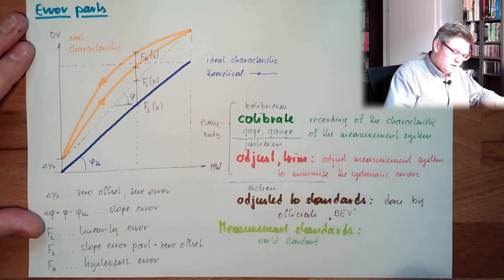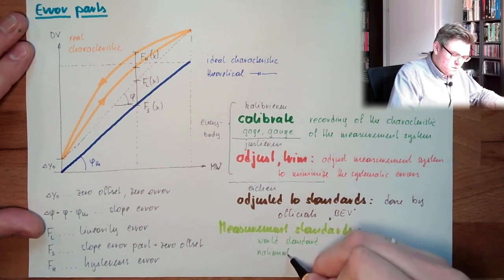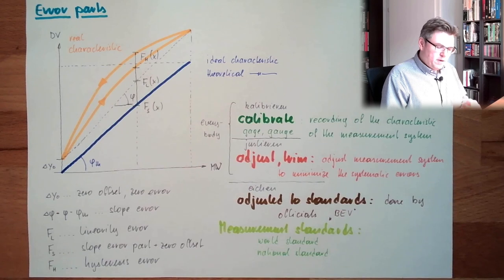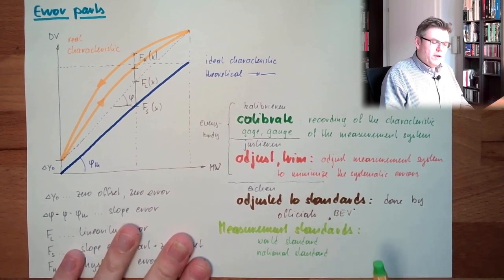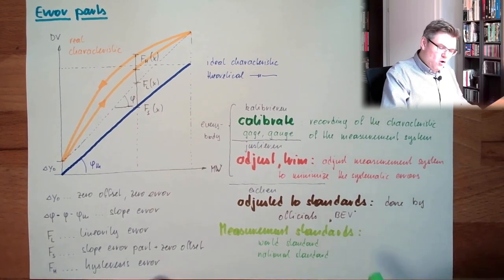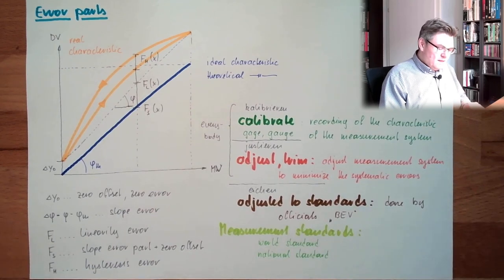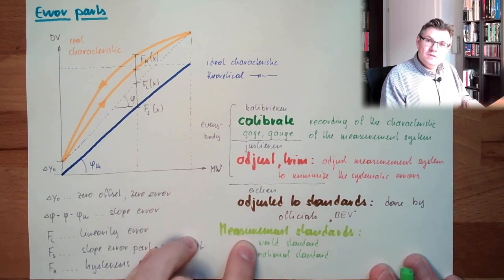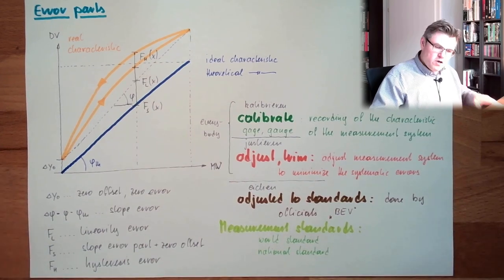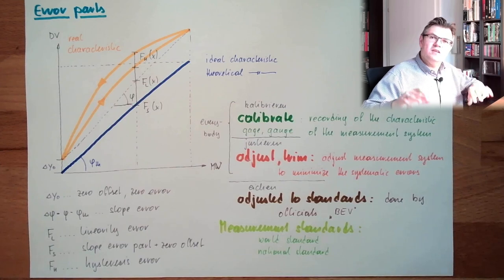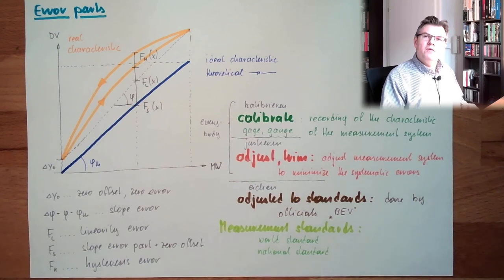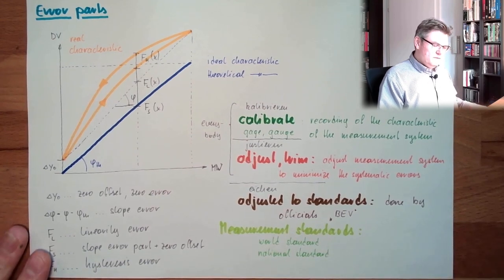Then usually we have national standards. These are kept in Austria by the Bundeseichen Vermessungsamt. They know best in the nation. And they have to check their standards with the world standard of course. And then they get a certificate, and they say okay, if your national standard is as good as the world standard, please come back in years to keep your national standard up to date or up to reality.